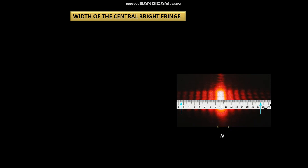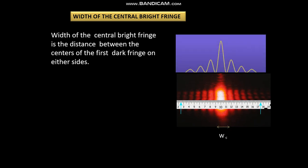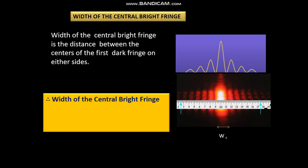Width of the central bright fringe. So let's see how to measure the width of the central fringe. Width of the central fringe is nothing but the distance between the centers of the first dark fringe on either sides. So we have width of the central bright fringe w_c is equal to 2y_1d that is 2W that is 2 lambda D upon a.